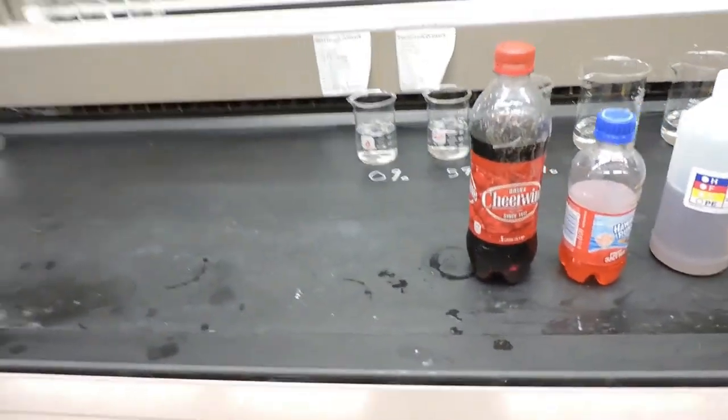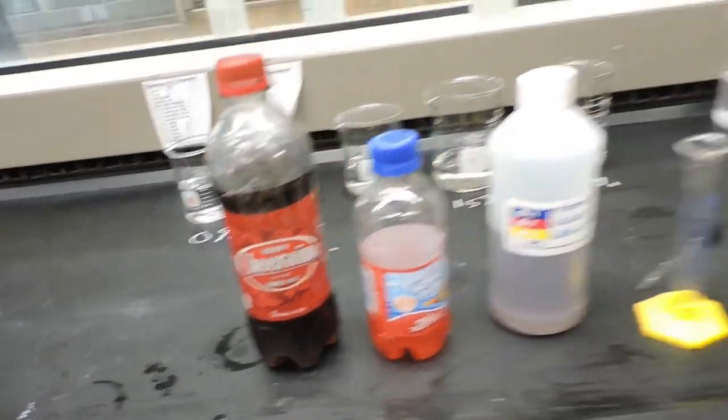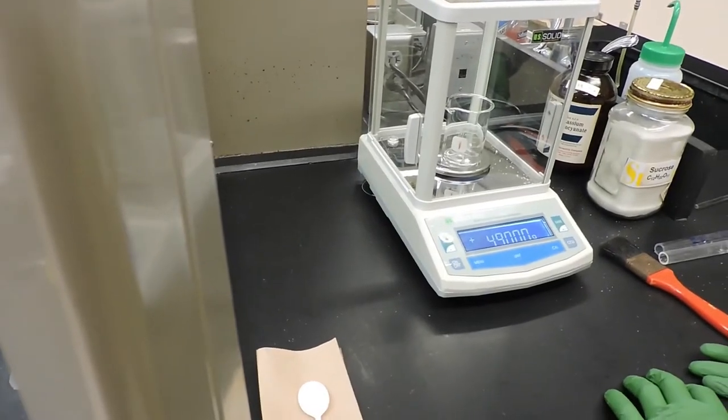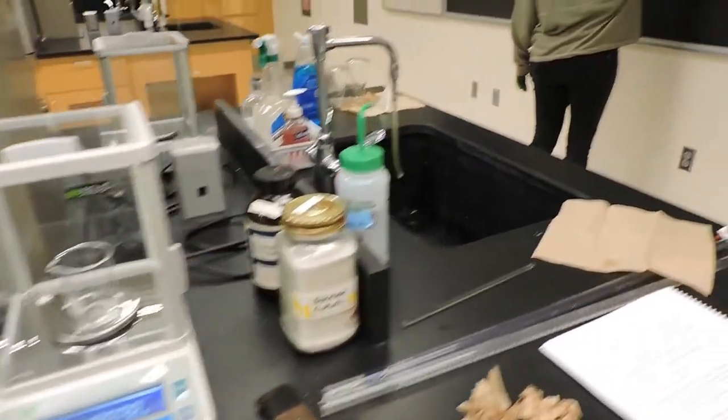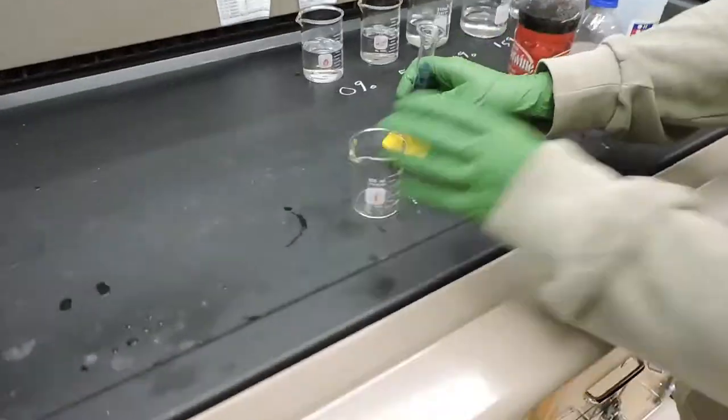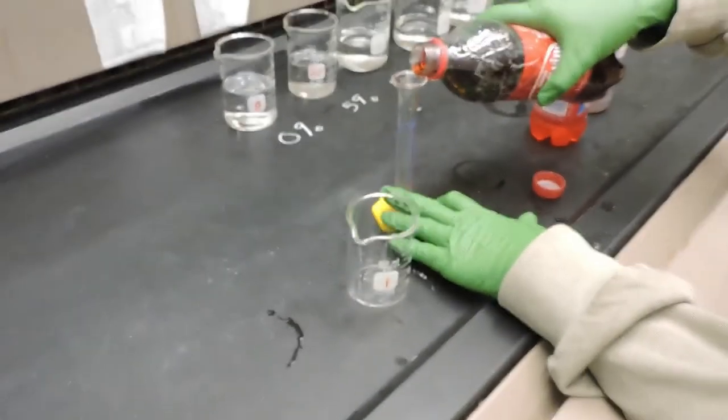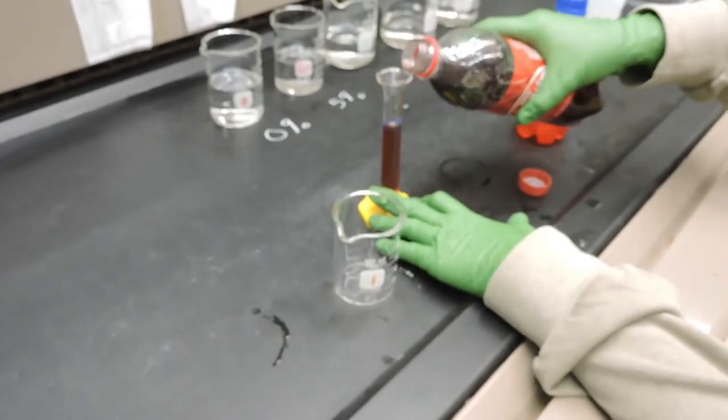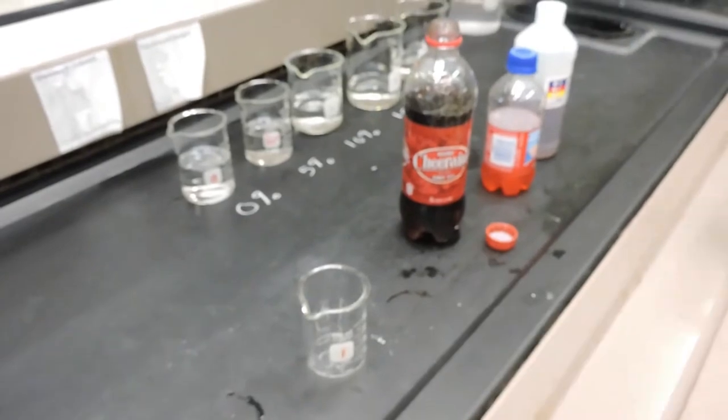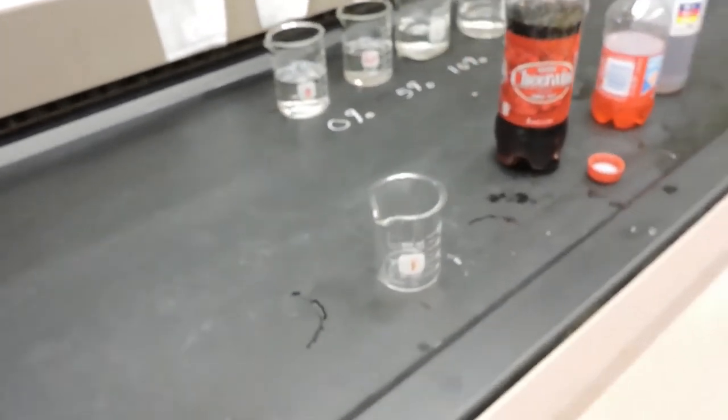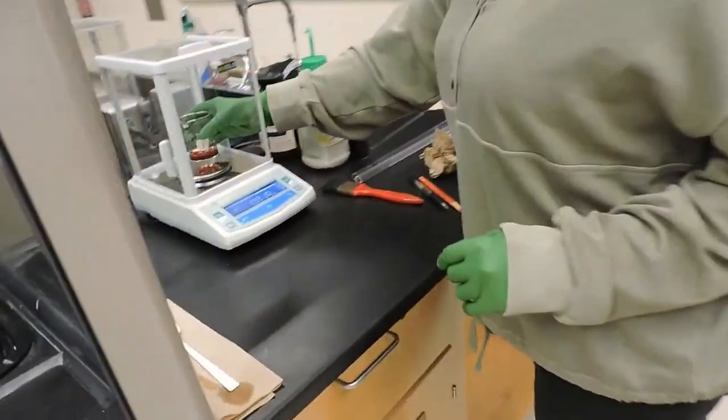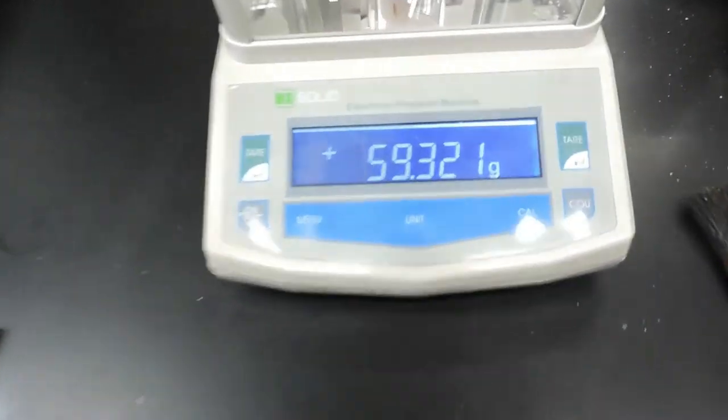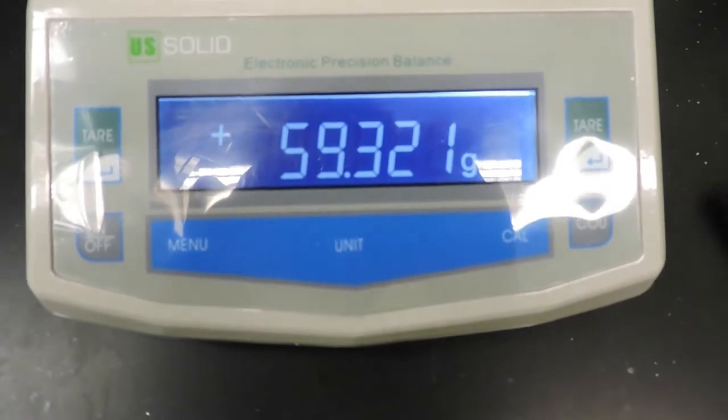So to determine the density of the Cheerwine, we're going to take the empty beaker and weigh it. And the mass of the empty beaker is 49.000 grams. Then we'll add 10 milliliters of Cheerwine. And now 10 milliliters are in the beaker, we'll find its mass again. And the difference will be the mass of the Cheerwine. So the mass of the beaker plus solution is 59.321 grams.